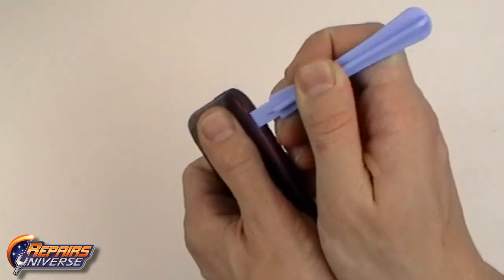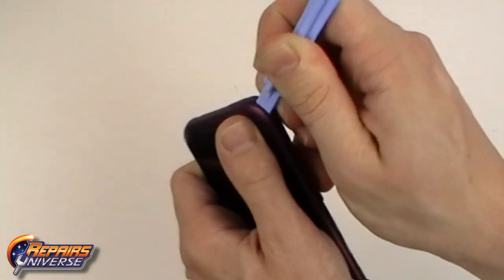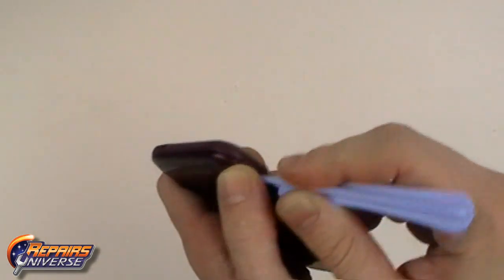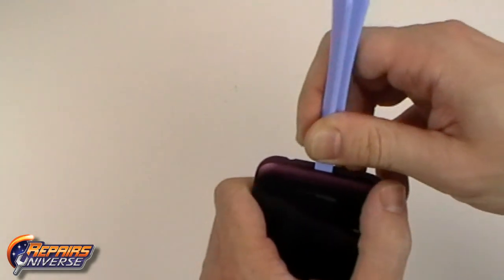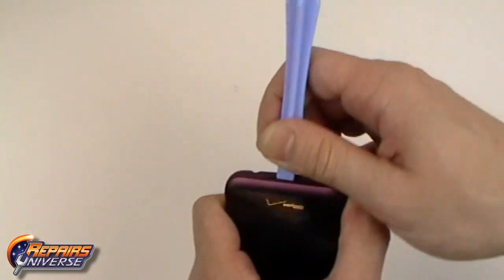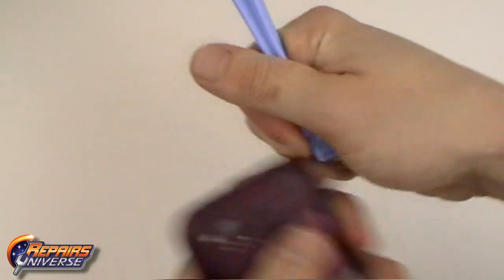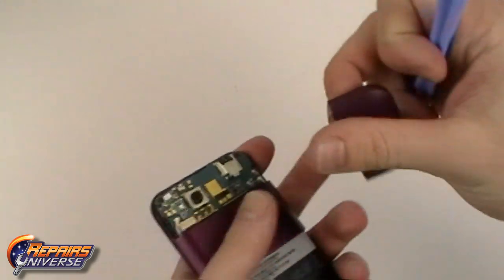Using a safe pry tool, gently slide it along the outside edges of the upper cover. Once all the clips are released, it will still be held in place with adhesive.